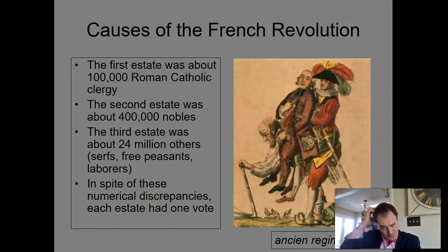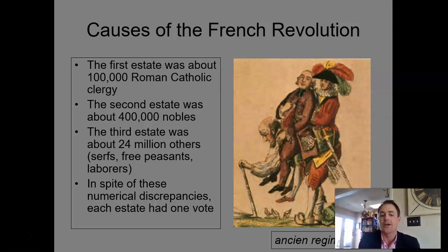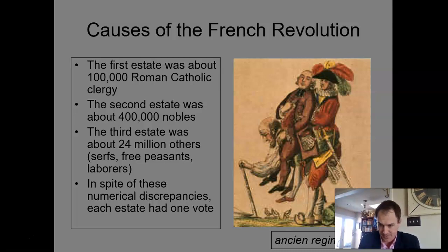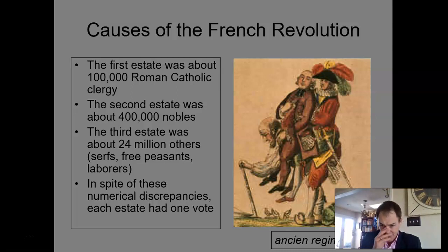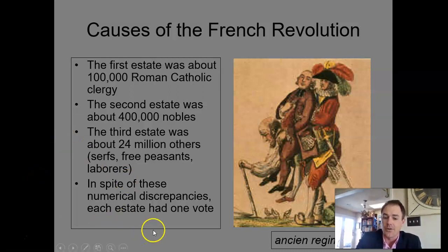A little bit about the three estates — this is how French society was divided. In the First Estate you have the Roman Catholic clergy, about 100,000 people. In the Second Estate you had the nobility, about 400,000. In the Third Estate, everybody else — it doesn't matter if you're a serf, a peasant, a laborer, a banker, a shopkeeper, or an artisan — about 24 million people. However, each estate had only one vote in the Estates General, so the first two estates normally outvoted the third estate. The cartoon illustrates this unfairness of the old order, showing the Third Estate holding up the other two.